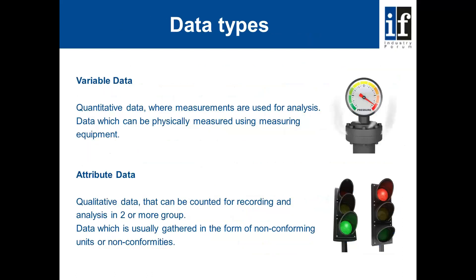We have two types of data to consider. We have variable data, which is quantitative data where measurements are used for analysis — data which can be physically measured using measurement equipment. We also have attribute data, which is qualitative data that can be counted for recording and analysis in two or more groups, usually gathered in the form of non-conforming units or non-conformities.